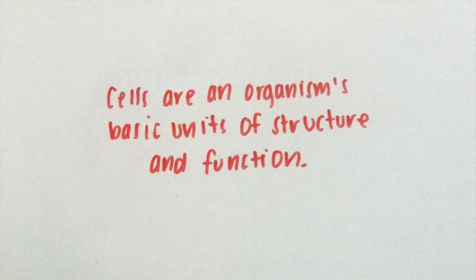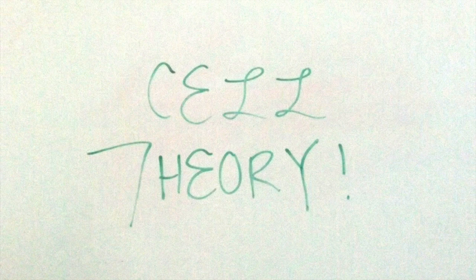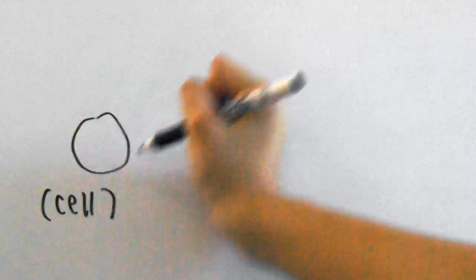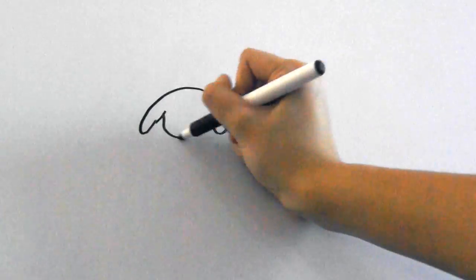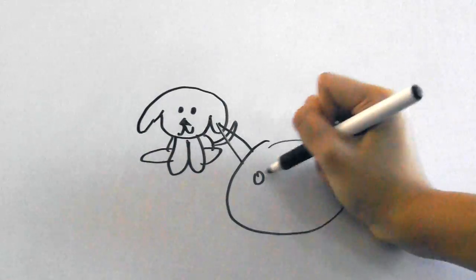This also goes hand in hand with the next theme. Cells are an organism's basic units of structure and function. We just talked about that but it might be good for you to brush up on the cell theory. First of all, cells are the basic unit of function in an organism. Second, all living things are made of cells and finally, only existing cells can make new cells.